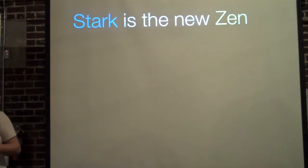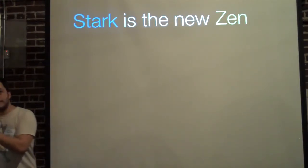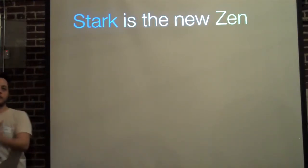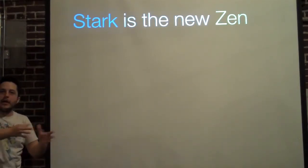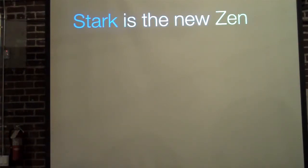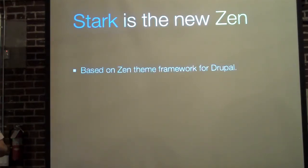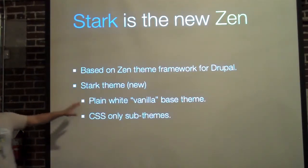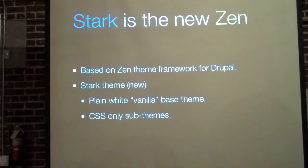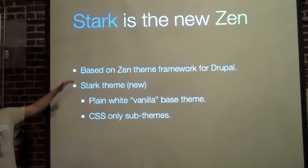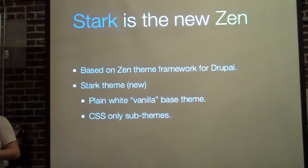Stark is the new Zen. For those that don't know, Zen is a plain white vanilla base theme that you can build your themes on top of. It has a lot of the markup ready for you and the CSS is plain and basic. Stark is the new built-in Drupal 7 plain white vanilla theme, based on the Zen framework, and it allows you to create CSS-only sub-themes. So if you don't want to touch any PHP or templates and just want to add your colors and graphics, Stark lets you build right on top of Drupal without installing anything external.